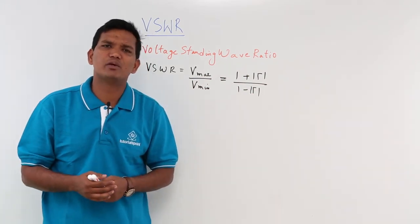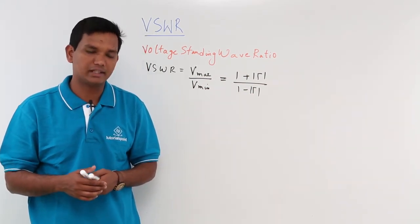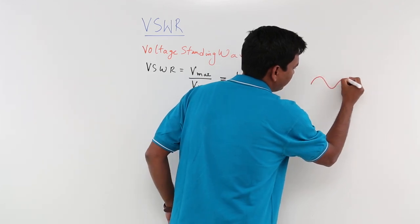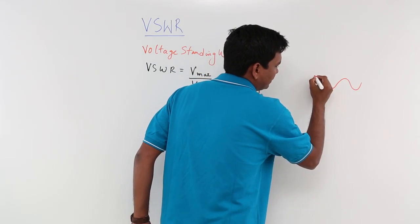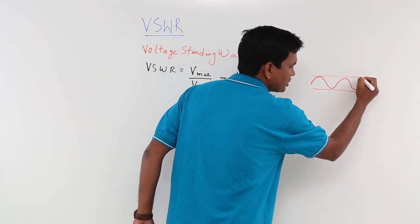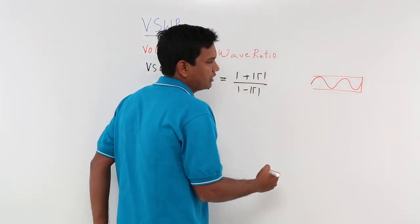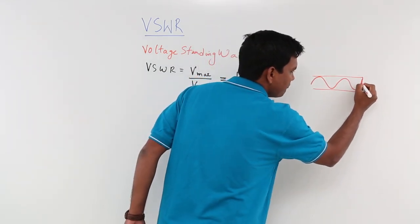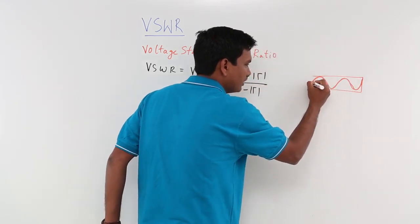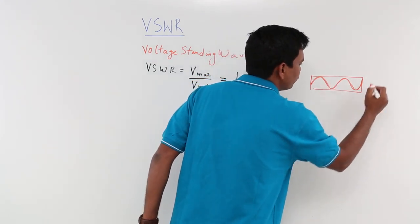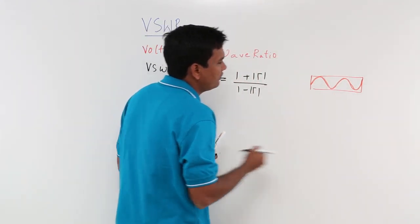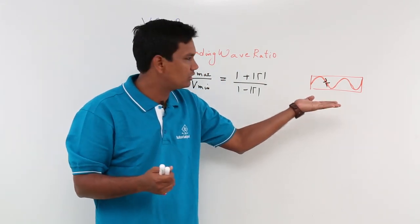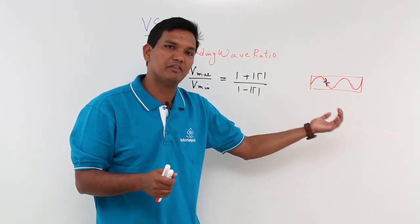To understand the physical meaning of voltage standing wave ratio, consider sending a wave through a pipe. When the wave reaches the end and the pipe is closed, the wave hits the wall and comes back. If you also close the other side, this back-and-forth motion keeps happening — the wave is going forward and coming back simultaneously, so it appears as though the wave is standing still.